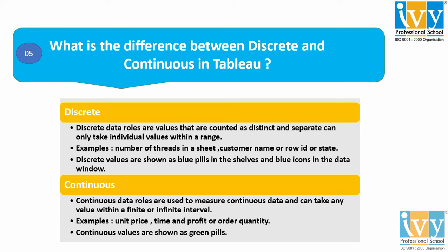Coming to continuous — on the other hand, if a field has values that can be added, averaged, or aggregated, those values are considered as continuous. It basically measures continuous data.